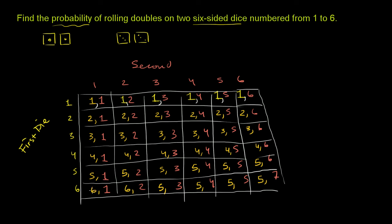These are all the possibilities. There are 36 of them because there are 6 different possibilities for the first die and 6 for the second die — 6 times 6 is 36. Now how many of these outcomes meet the constraints for our compound event? A compound event is simply an event that has more than one possible outcome that satisfies it.